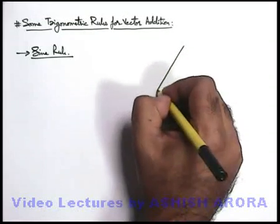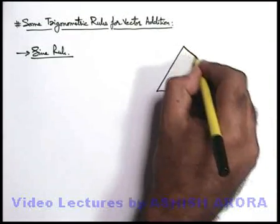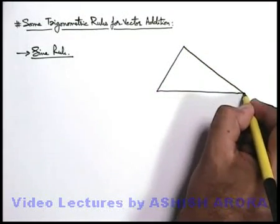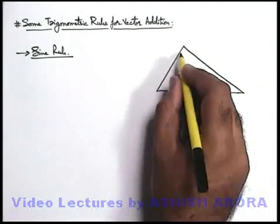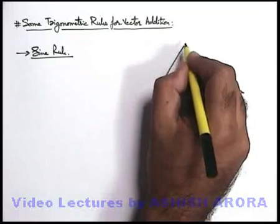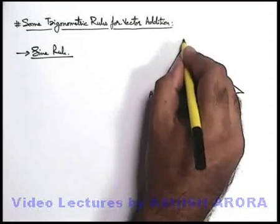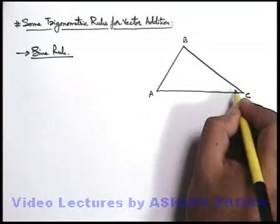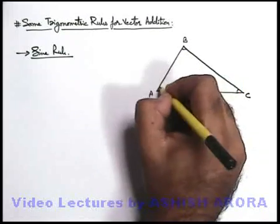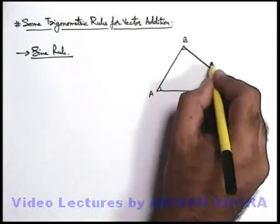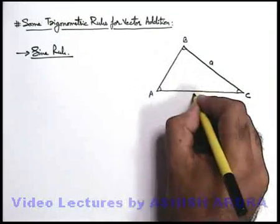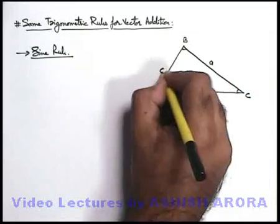In sine rule, say we are given a triangle. In sine rule we relate the length of the sides of a triangle with the angles opposite to each side. Say if the vertices of the triangle are A, B, and C, and the length of the sides opposite to angle A is small a, opposite to B is small b, and opposite to C is small c.